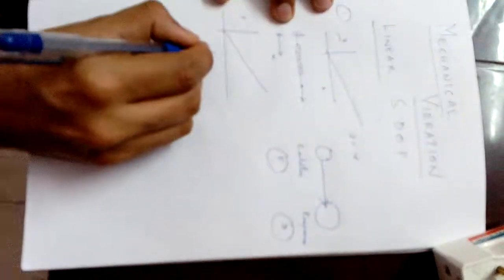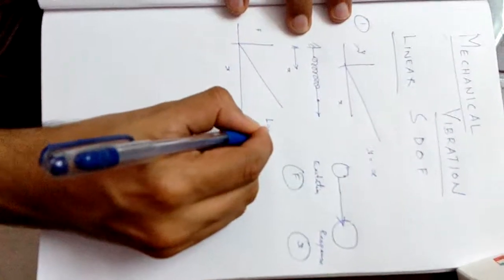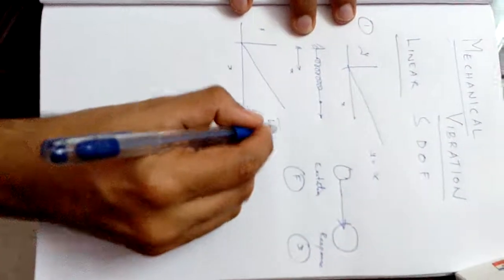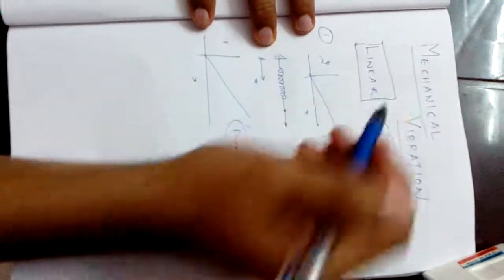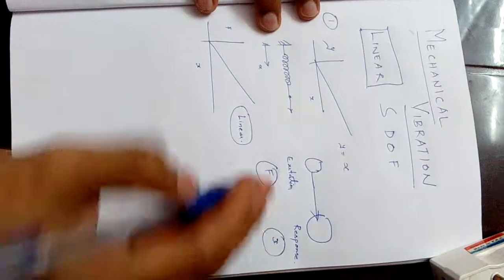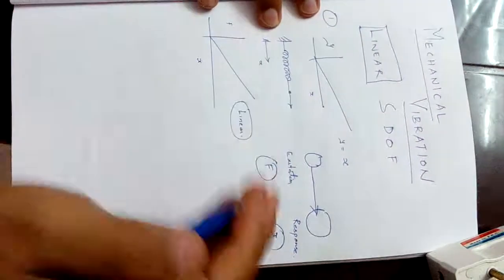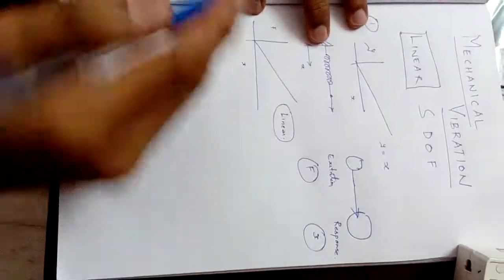A mechanical system can be called linear when the relationship between excitation and response is linear. I can give you a few real-life examples. This is a simple pendulum example. Let's say theta is the displacement I am giving.